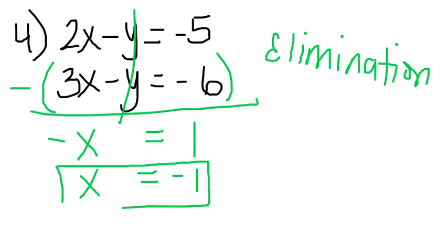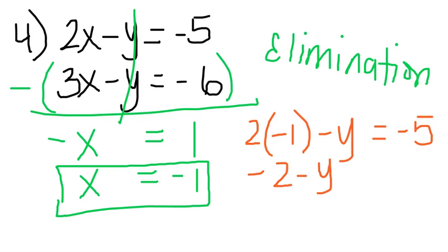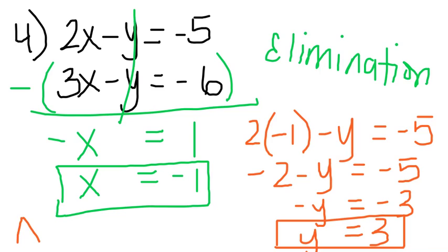You can already identify what the answer is on your multiple choice just by the x value. The answer here is A, negative 1 comma 3. But just to show you where the 3 comes from, you're going to plug the negative 1 into one of your equations. So let's just say the first equation. Multiply 2 times negative 1, and then let's solve for y. So we have negative 2 minus y equals negative 5. Add 2 to both sides, and you get negative y equals negative 3, which makes y equal to positive 3. So that's how we get letter A, which is negative 1 comma 3.